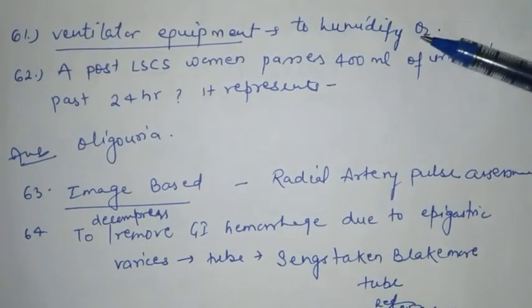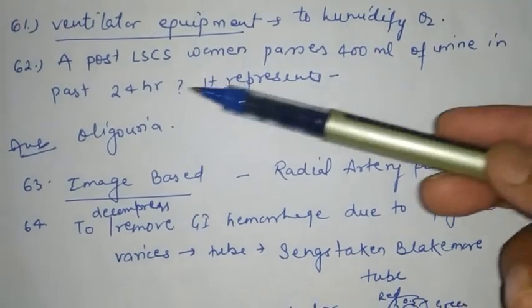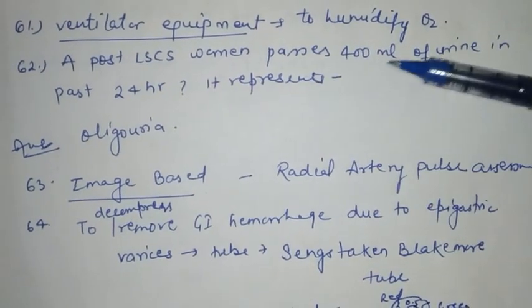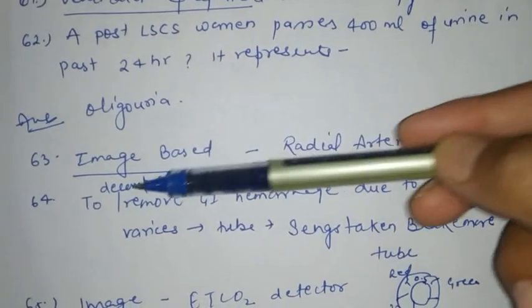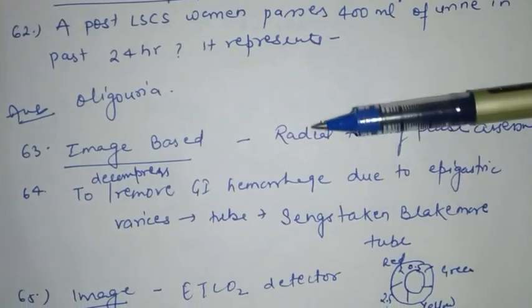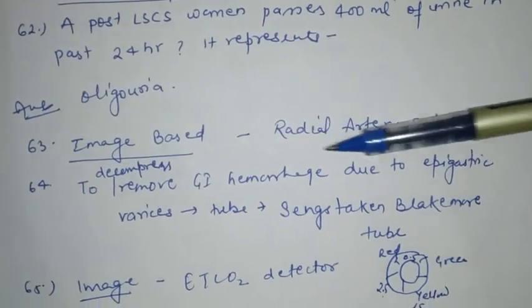The questions that I find more, I will add them. First question: the ventilator equipment that was given — it was green in color. What was the function? To humidify oxygen.